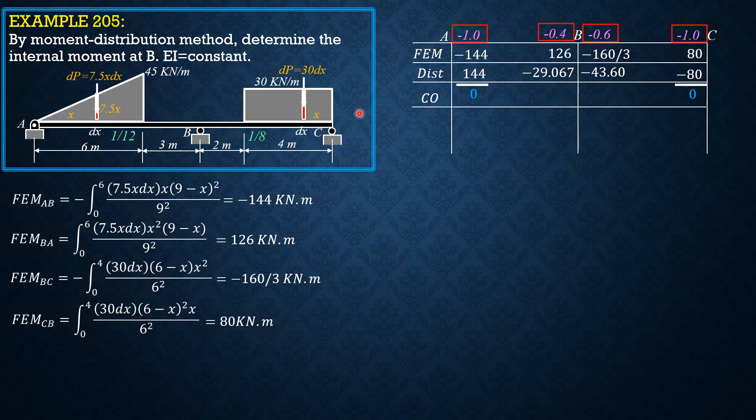So carry over next because this is already balanced, and at C balance we don't need to carry over half of negative 29.067 here, but instead 144 over 2 carry over it here. So 72. We don't need to carry over half of negative 43.6 to joint C because C is already balanced. Therefore only half of negative 80 should be carried over in this joint, so negative 40.